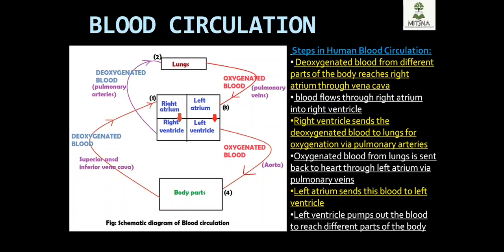Steps in human blood circulation: Deoxygenated blood from different parts of the body reaches the right atrium through superior and inferior vena cava. Blood flows from the right atrium into the right ventricle, then to the lungs for oxygenation. From the lungs, oxygenated blood goes to the left atrium, then left ventricle, and then oxygenated blood is pumped to different parts of the body through the aorta.